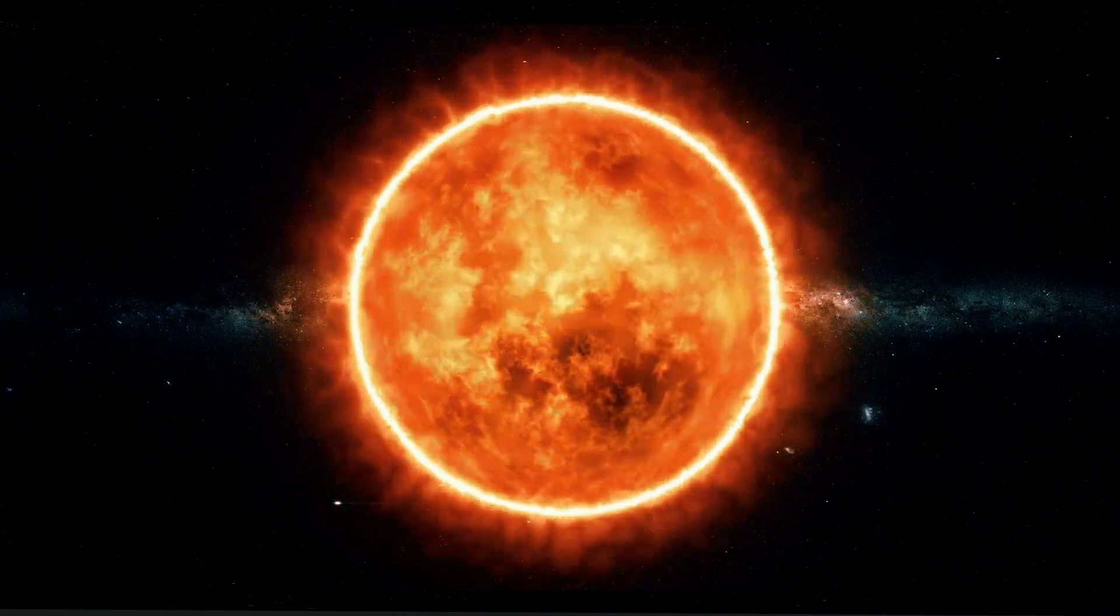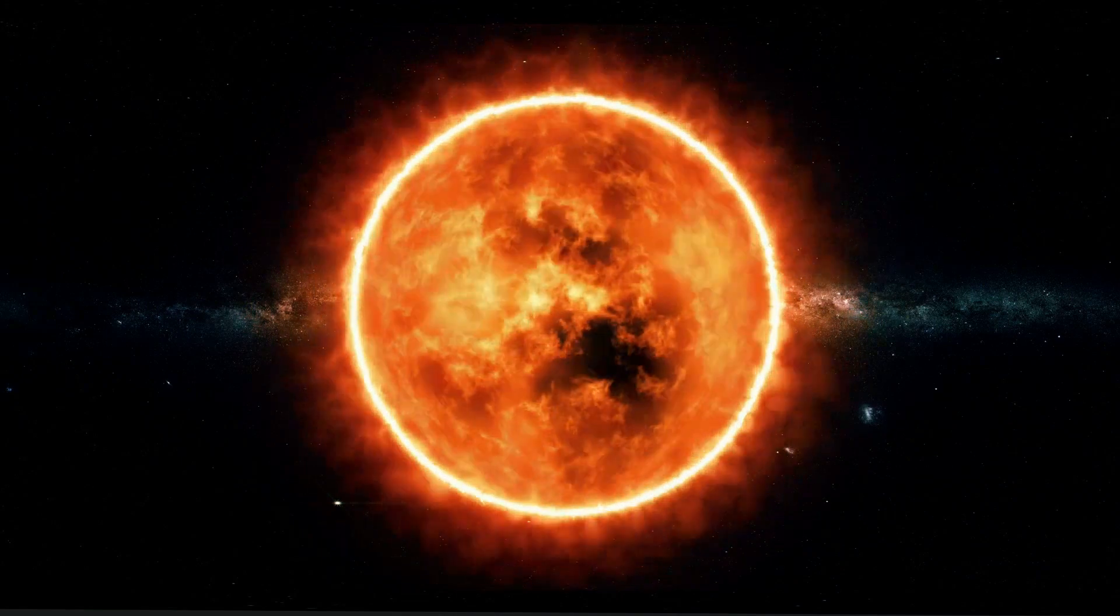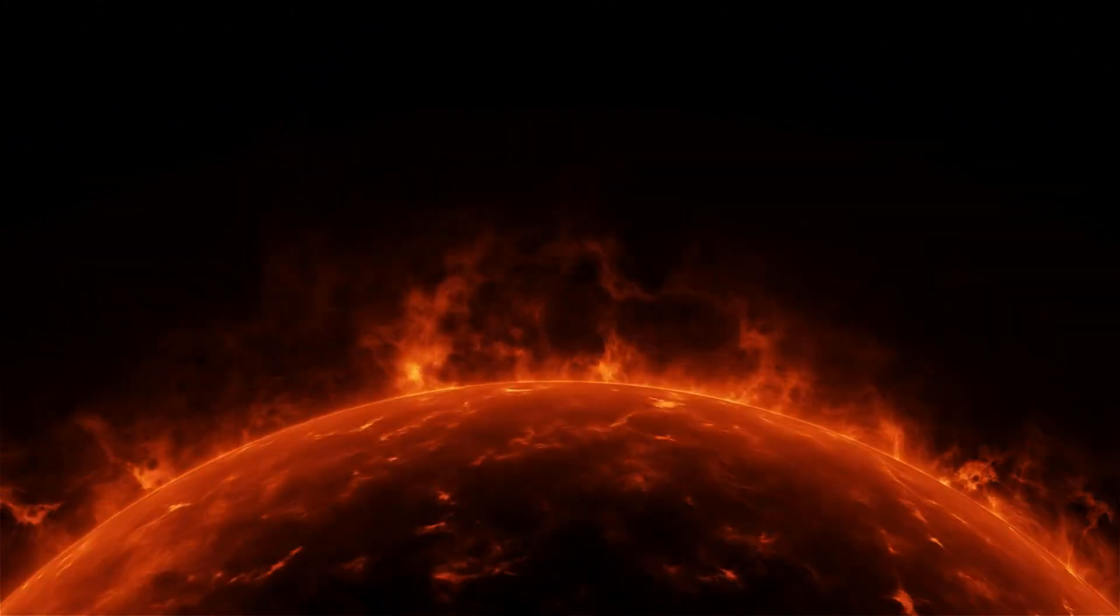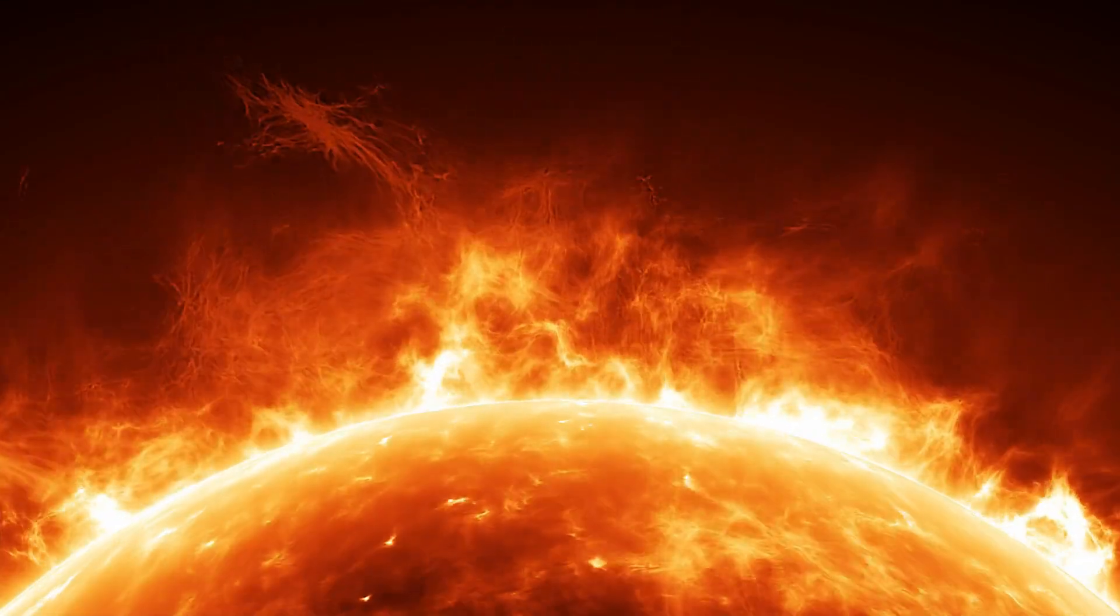The Sun experiences an 11-year solar cycle, during which its activity, including sunspots, solar flares, and coronal mass ejections, varies.